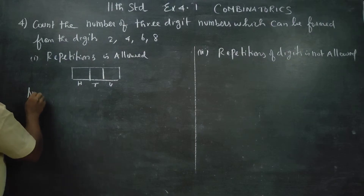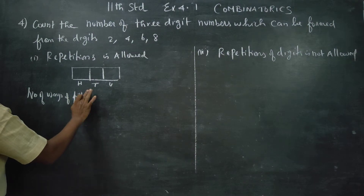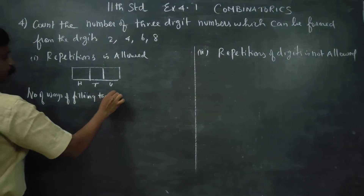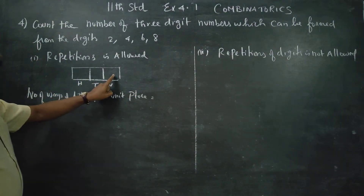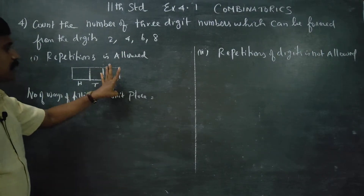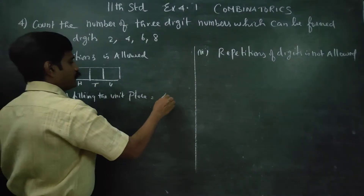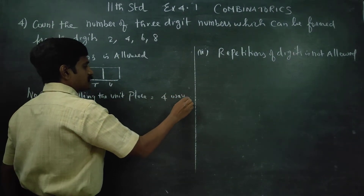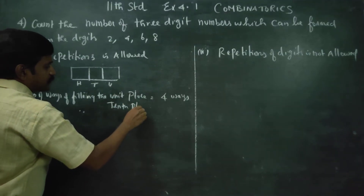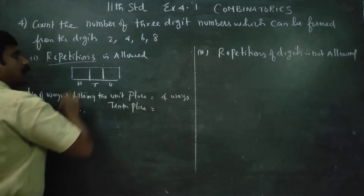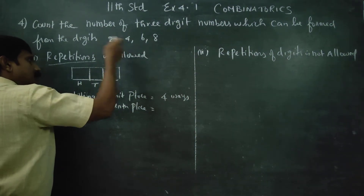First, the number of ways of filling the units place. It can be filled with 1, 2, 3, or 4 — so 4 ways. Since repetition is allowed, the tens place can also be filled with any of the 4 digits. So 4 ways for the tens place as well.